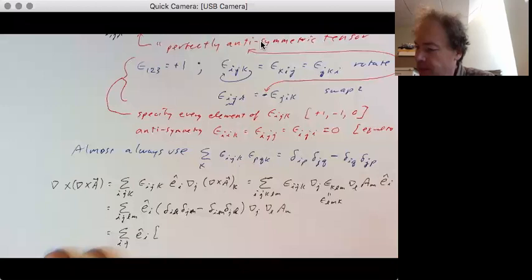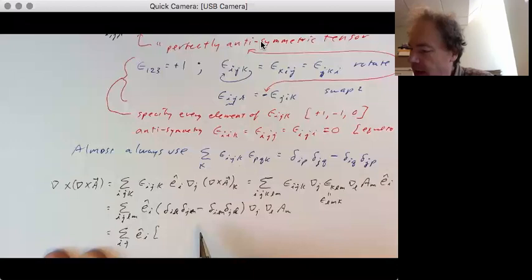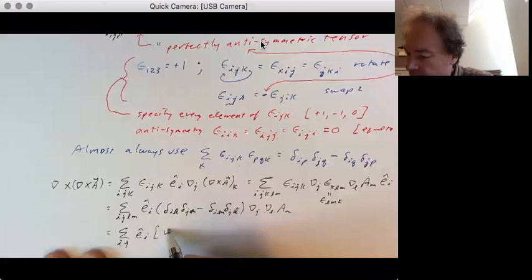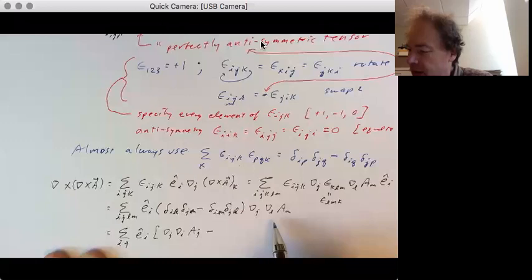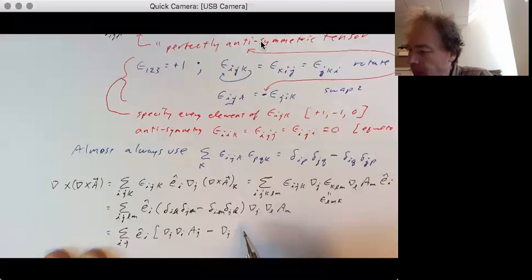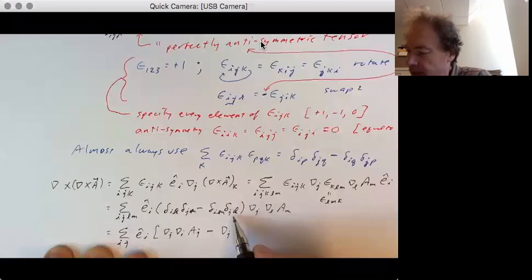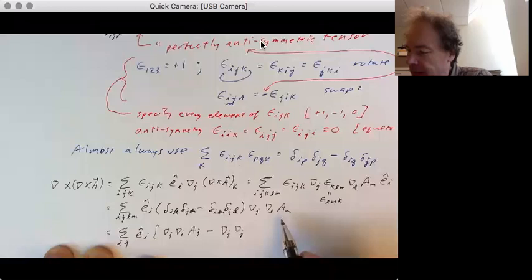And now we're summing over l and m. So l is going to be i in the first term, del i. And m is going to be the same as j, a sub j. And the second term here, i is going to be, the j stays the same. And this delta is l, it goes with j.